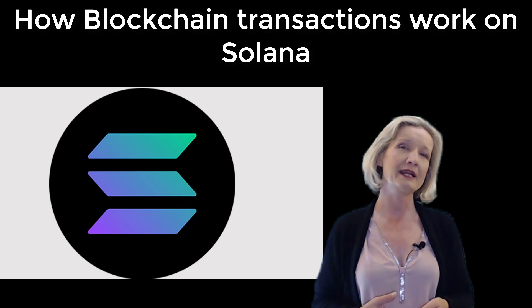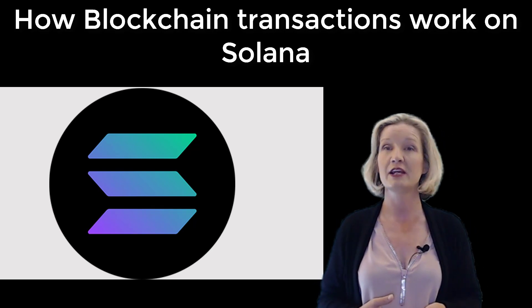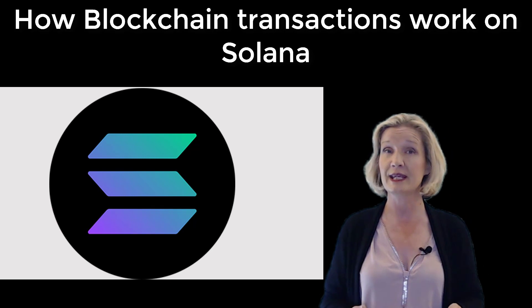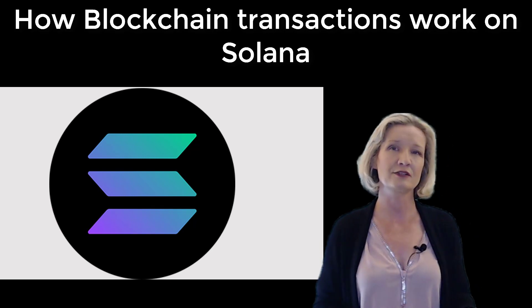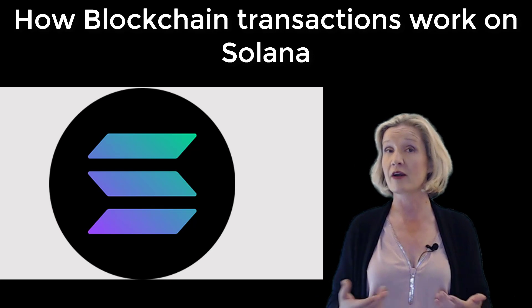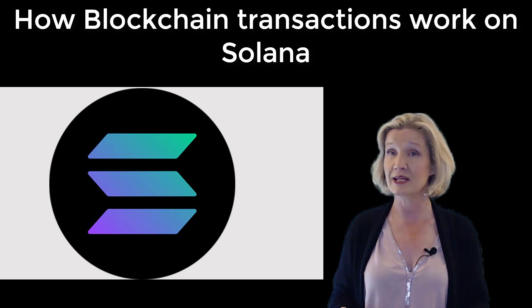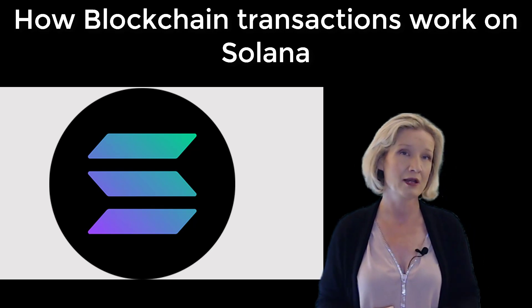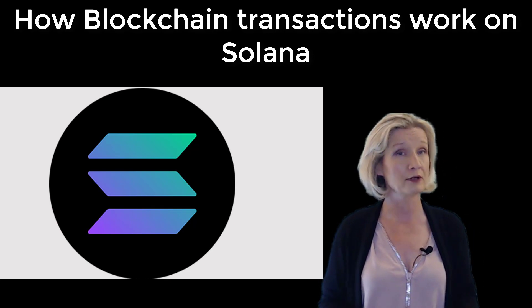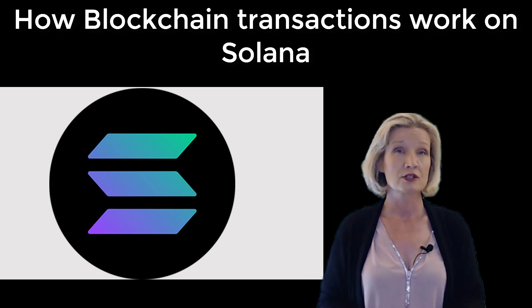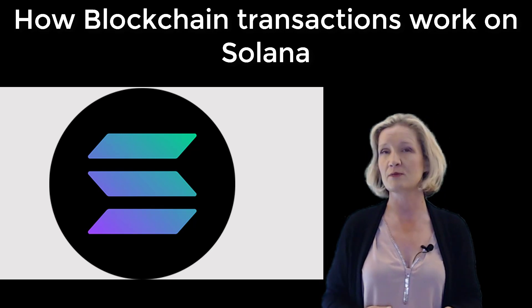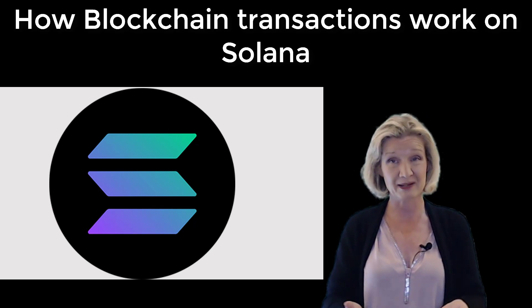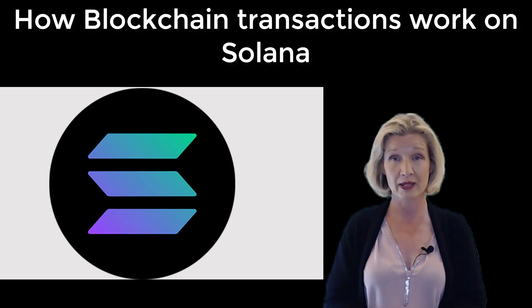For consensus, Solana uses a combination of proof of stake and proof of history. Proof of stake is used to select validators. The more a validator stakes, the more skin they have in the game, the more they could lose — so it's inherent that they're trusted more. If they act badly, their stake can be slashed.